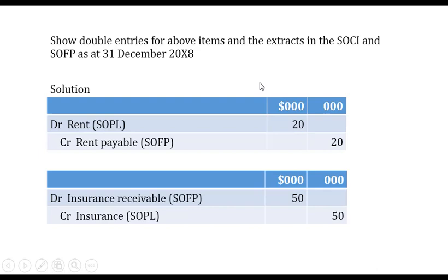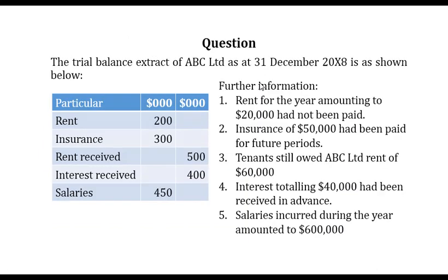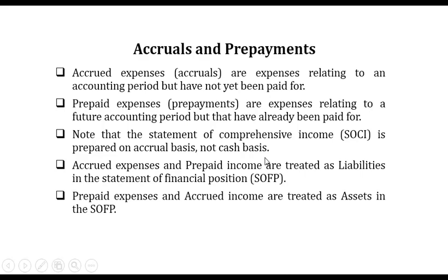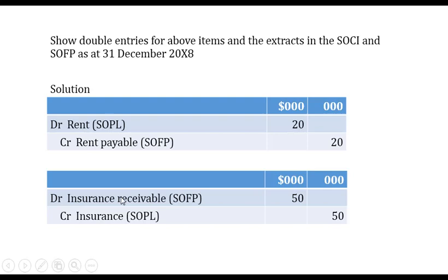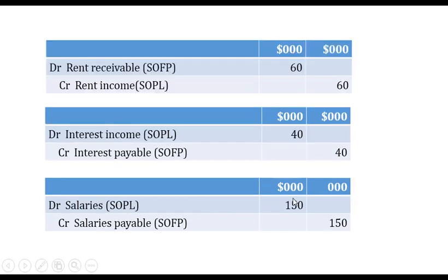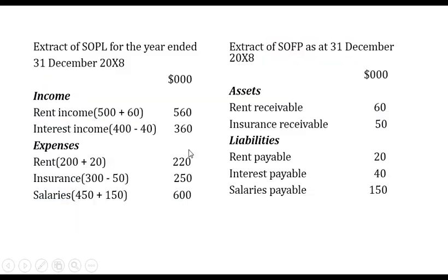For insurance: the trial balance shows three hundred thousand paid. We reduce it by fifty thousand for the prepayment, so insurance in the income statement is two hundred and fifty thousand. In the statement of financial position, insurance receivable of fifty thousand is recorded as an asset.